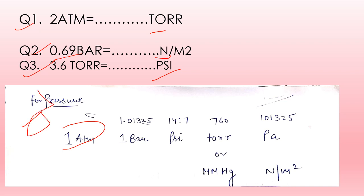Just remember this series: 1 atm, 1 bar, psi, torr, and pascal. For torr we also use mmHg, and for pascal we also use newton per meter square.